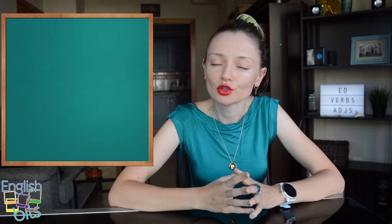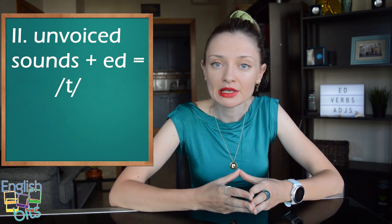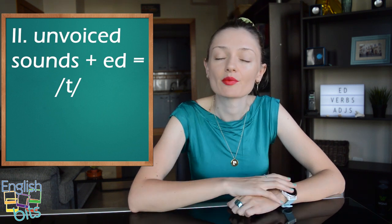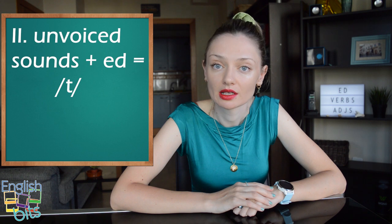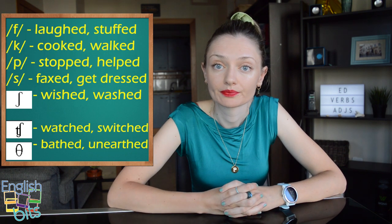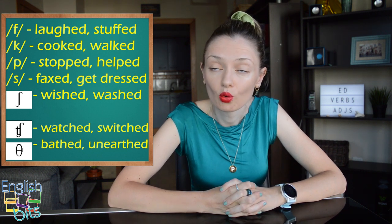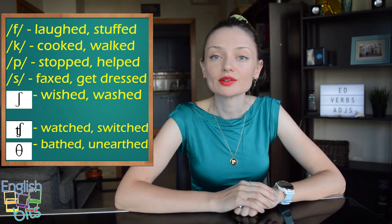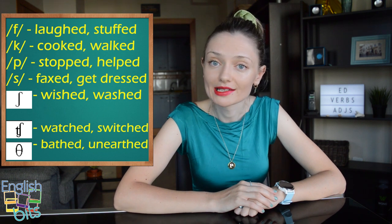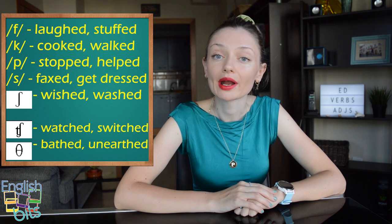Now, let's move on to our second group. If the final sound of the infinitive is unvoiced — it means that there is no vibration of the vocal chords — in this case, the pronunciation of ED would be T. Let's look at unvoiced sounds. For example, F: laugh, in the past it would be laughed; or an adjective, stuffed. The sound K: for example, cooked or walked. The sound P: for example, stopped or helped.